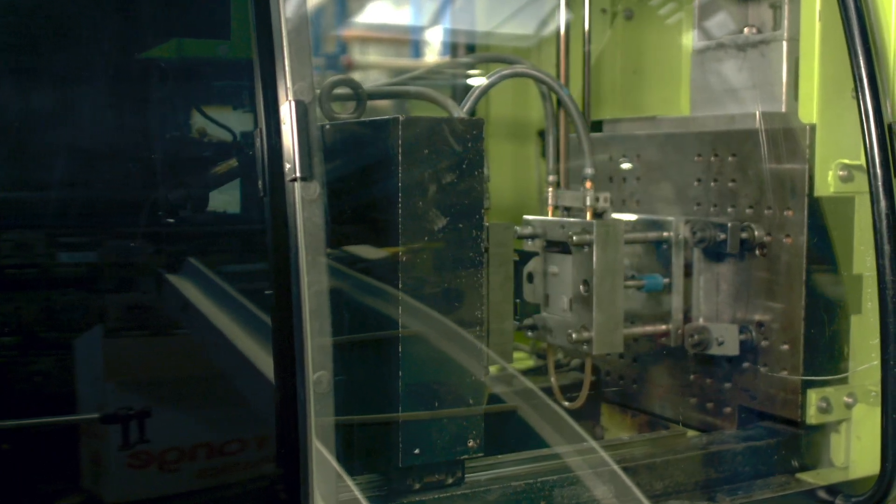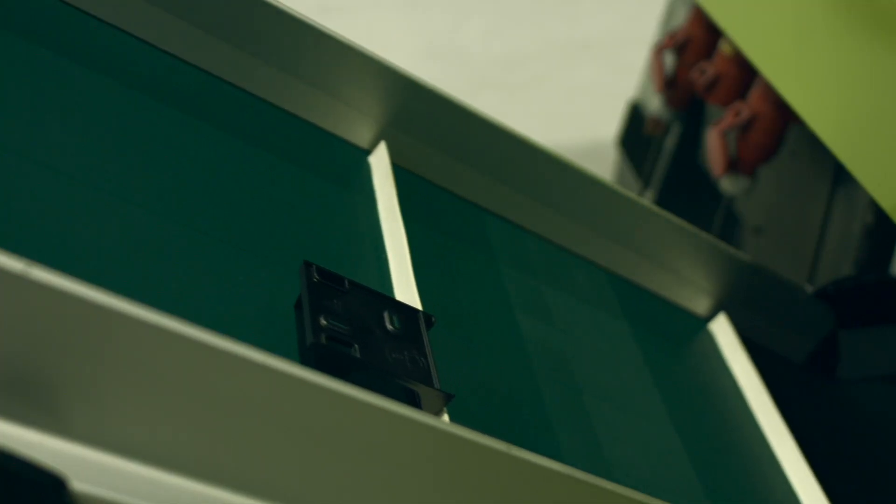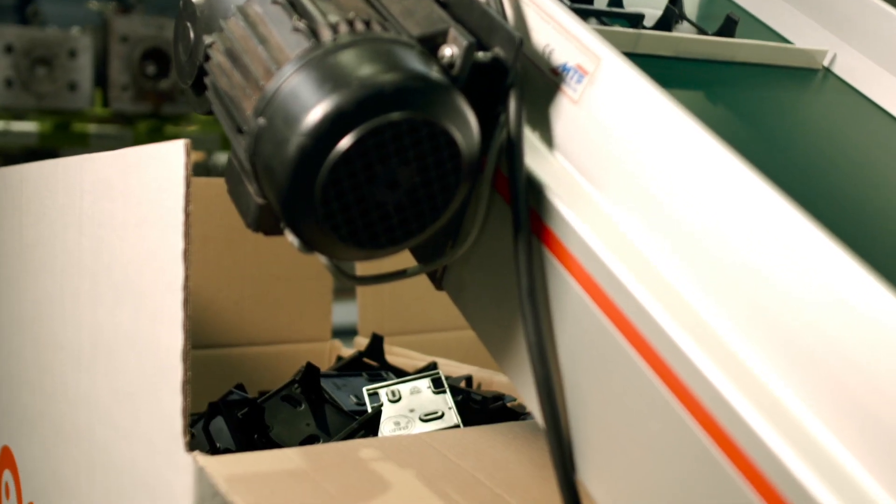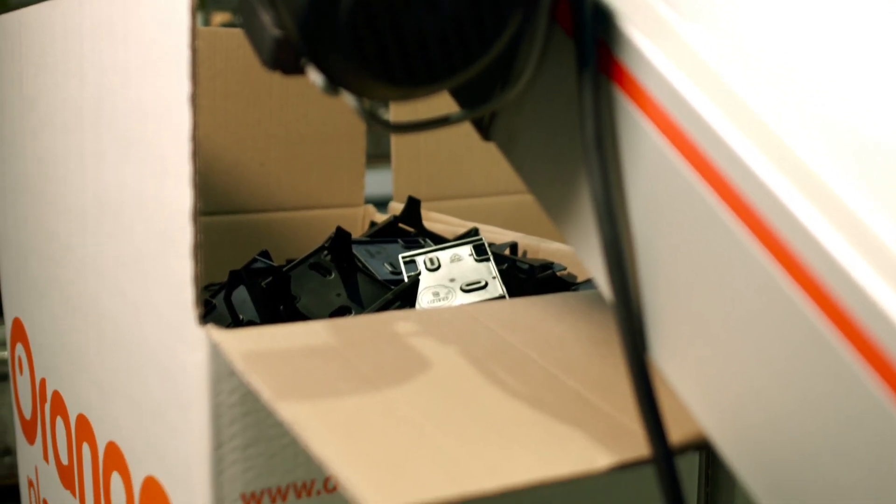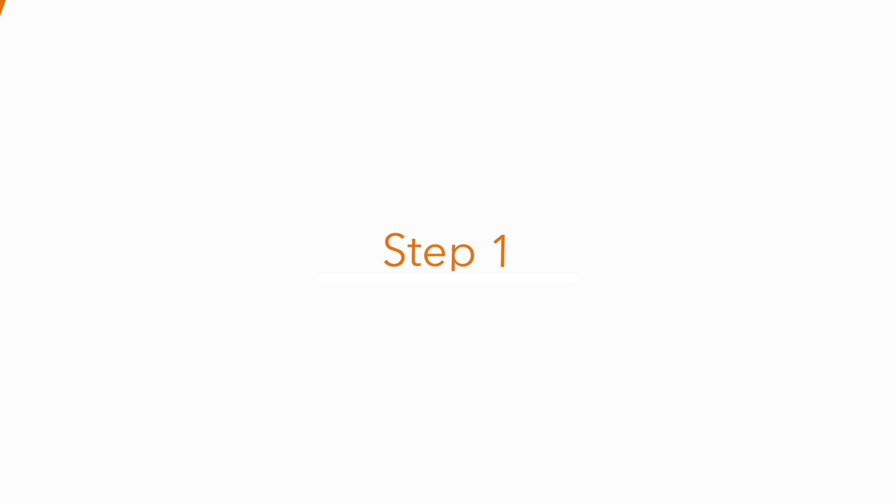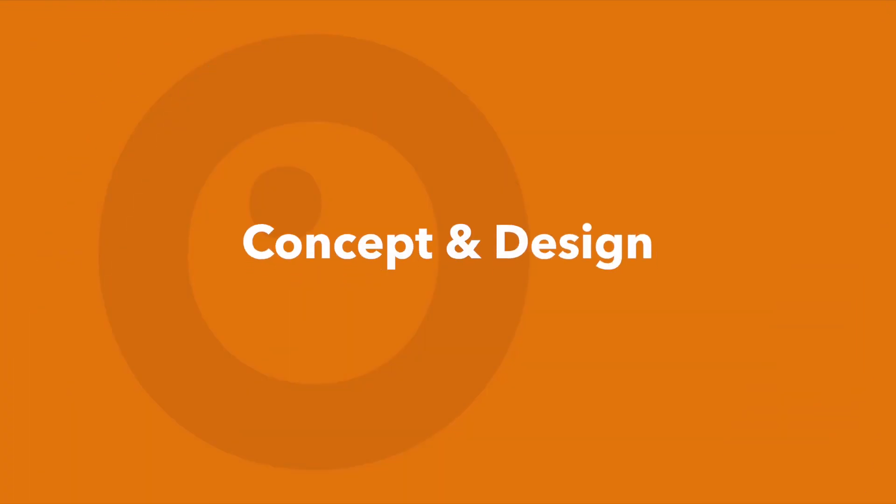Injection molding is used to create most of the plastic products we see around us every day. But before we arrive at the finished product, plastic production oftentimes starts with a rough product sketch and a 3D design.